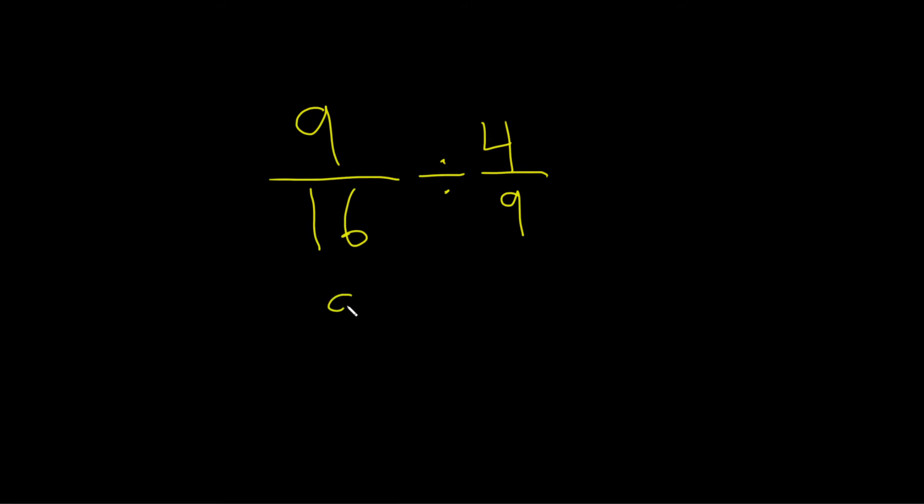So you write down your first fraction, 9 over 16. You change your division to a times, and then you flip it. When you flip this fraction, you're basically writing down the reciprocal. 9 fourths is the reciprocal of 4 ninths.